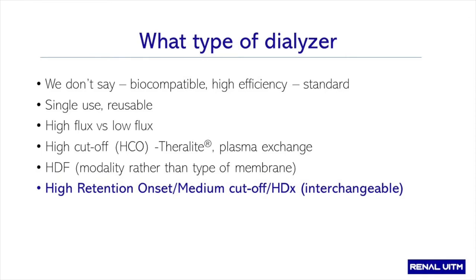When somebody asks what type of dialyzer you are using, we can say high flux versus low flux. We can also say a dialyzer has a high cutoff — for example, Theralite, which was designed to remove bigger free light chains or even for plasma exchange, where you can actually remove immunoglobulin. And then finally you have your high retention onset, medium cut-off, or HDX dialyzer — these terms are basically interchangeable.